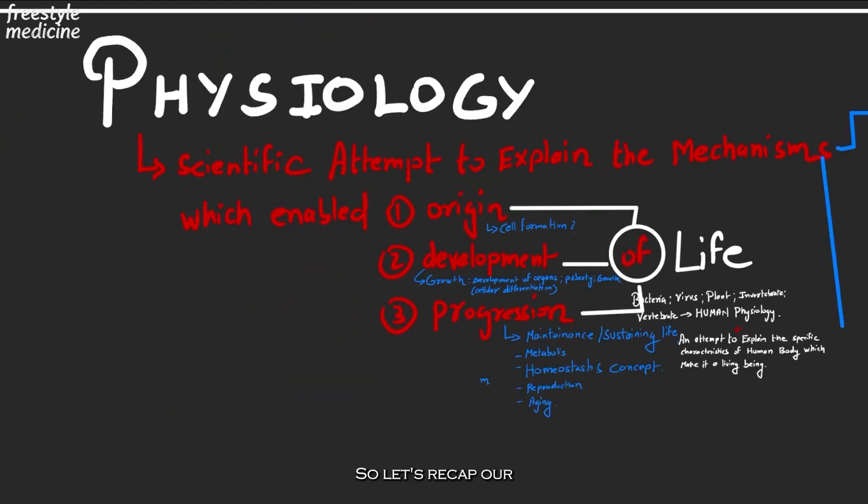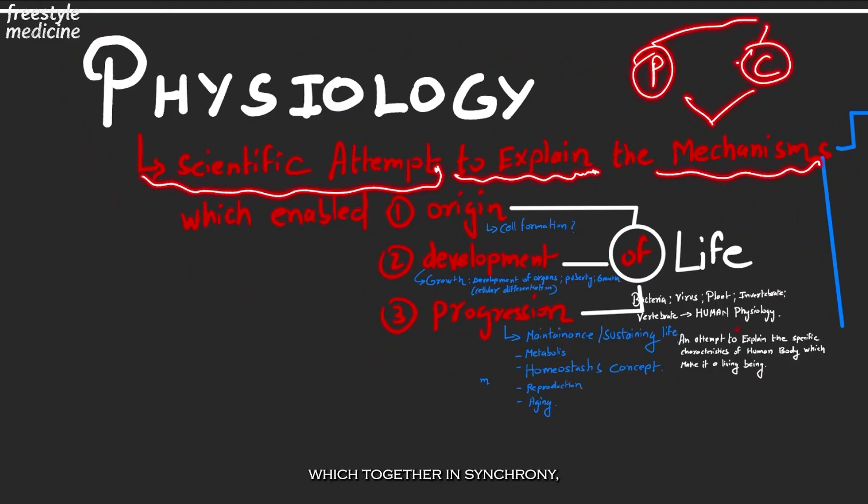So let's recap our definition of physiology. Physiology is nothing but a scientific attempt—that is, based on data which is repeatable, verifiable—and this data is used to explain the different mechanisms which are occurring at the back end, which are nothing but the physical and the chemical mechanisms which together in synchrony allow for the life to happen.